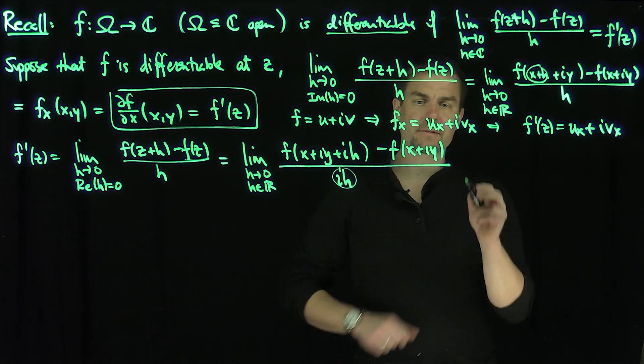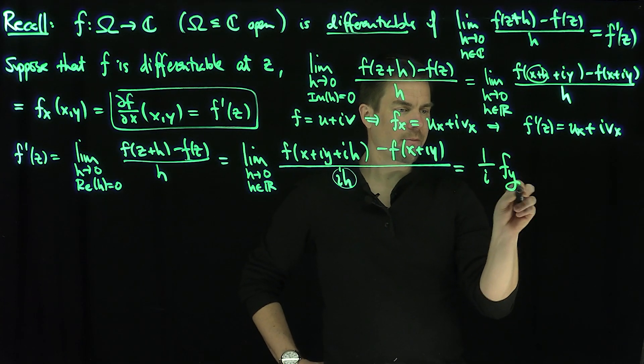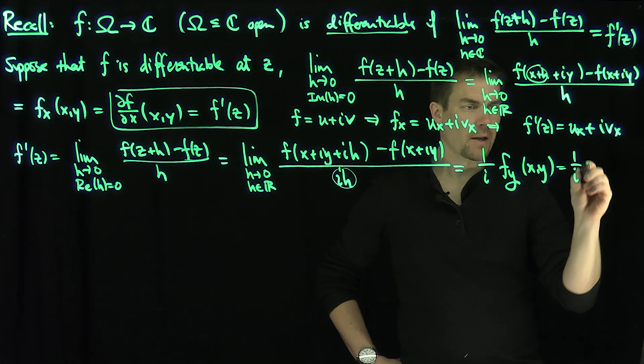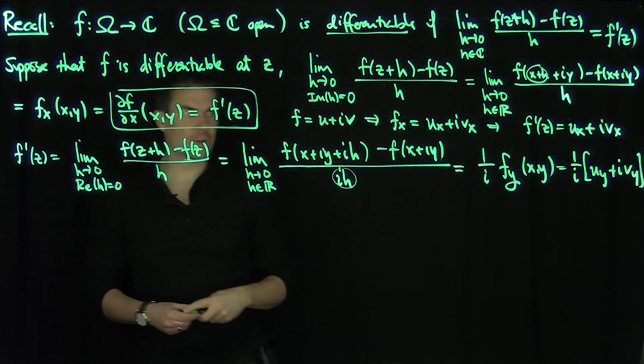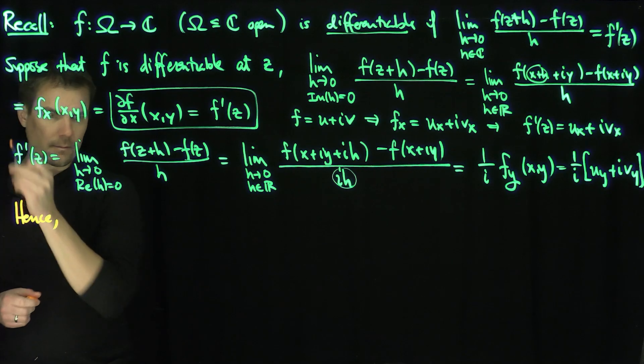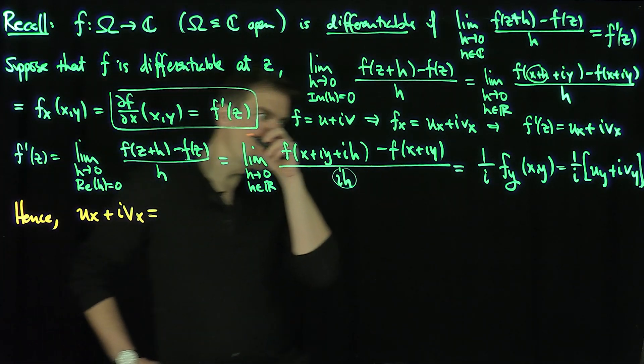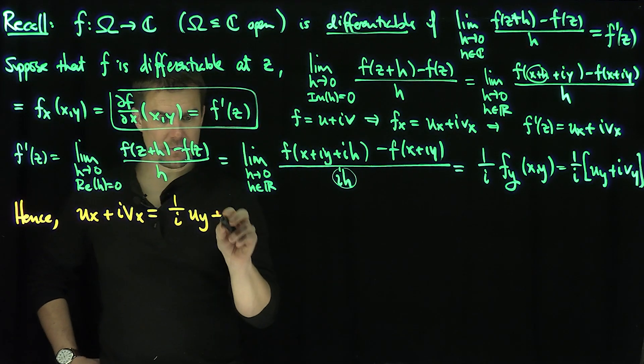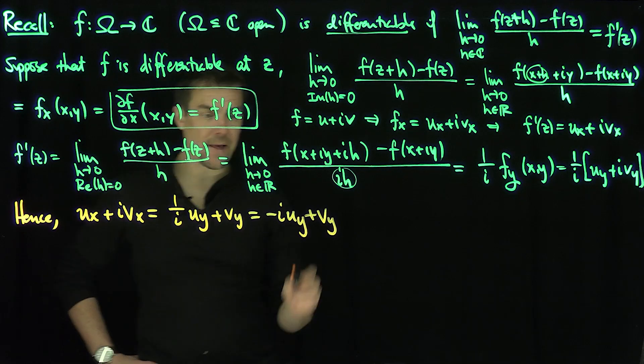Now for h real, it's purely imaginary. Now x is fixed and y is varying, so this converges to (1/i)·∂f/∂y at (x,y), which equals (1/i)(u_y + iv_y). And that's the formula for the derivative as well.